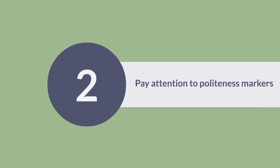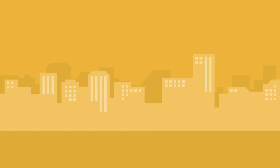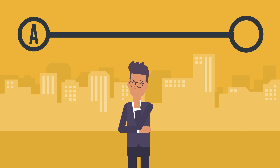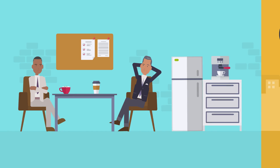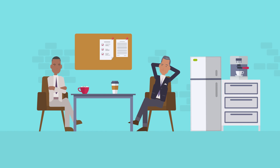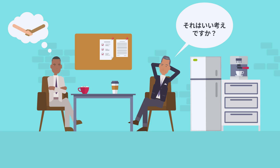Next, pay attention to the use of politeness markers. In some languages, speakers may change the directness of what they say to avoid conflict when they disagree. In Japanese, for example, complaints are often framed in the form of questions, as this framing allows the speaker to express displeasure without being impolite.